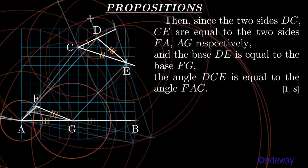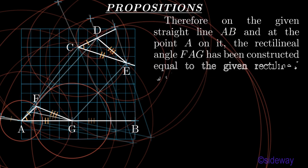Then, since the two sides DC, CE are equal to the two sides FA, AG respectively, and the base DE is equal to the base FG, the angle DCE is equal to the angle FAG, by Book 1 Proposition 8. Therefore, on the given straight line AB, and at the point A on it, the rectilineal angle FAG has been constructed equal to the given rectilineal angle DCE. That which was to be done.